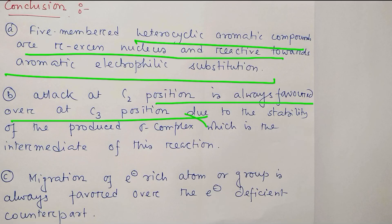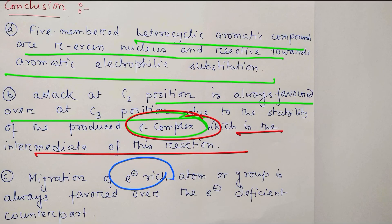And most importantly, migration of electron-rich atom or group is always favored over the electron-deficient. In this case, my electron-rich is actually sulfur and electron-deficient is the C=O double bond. So that is the overall discussion.